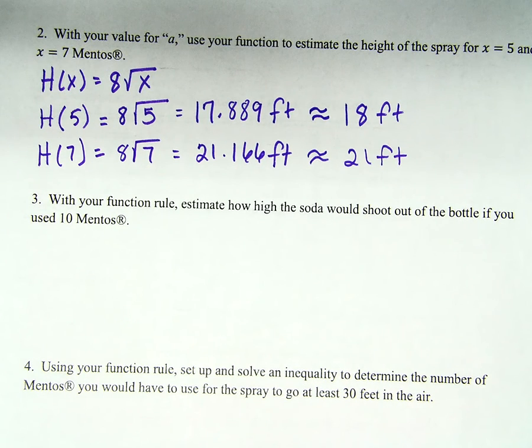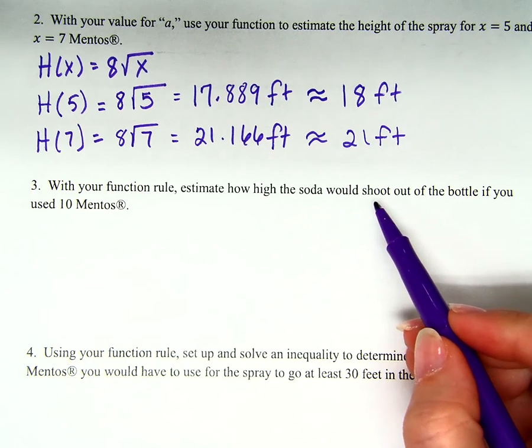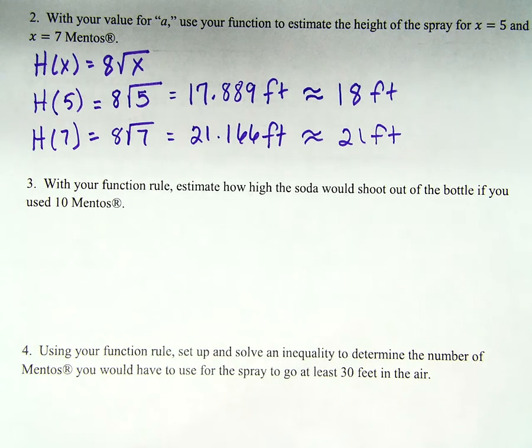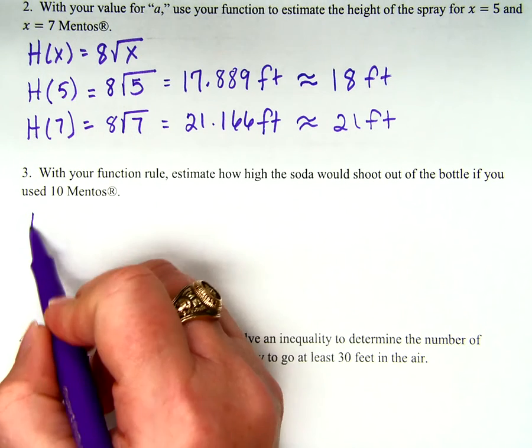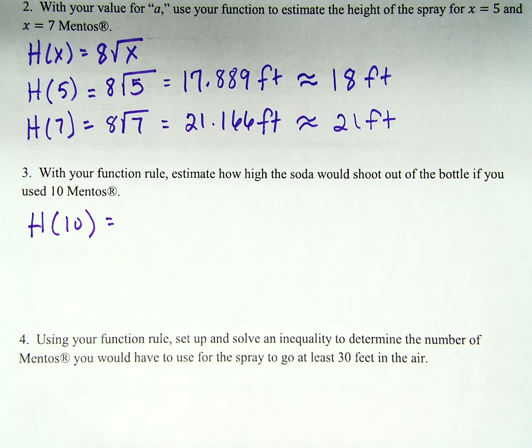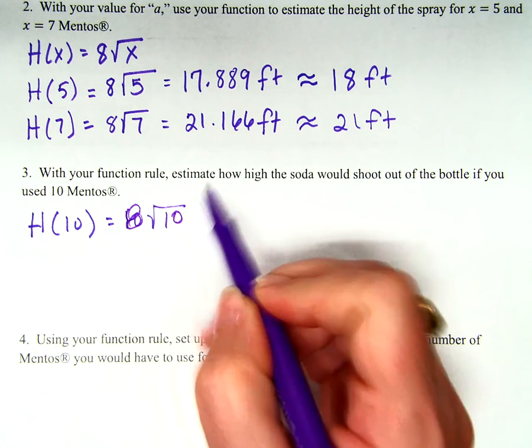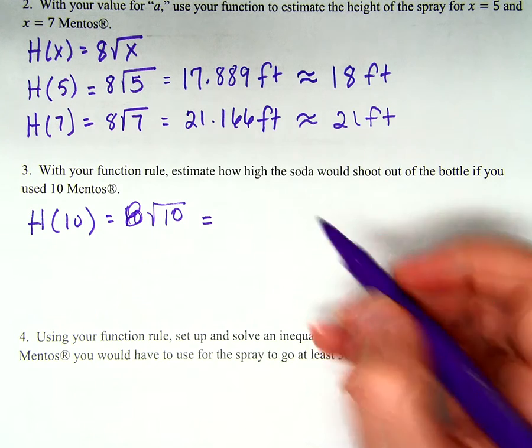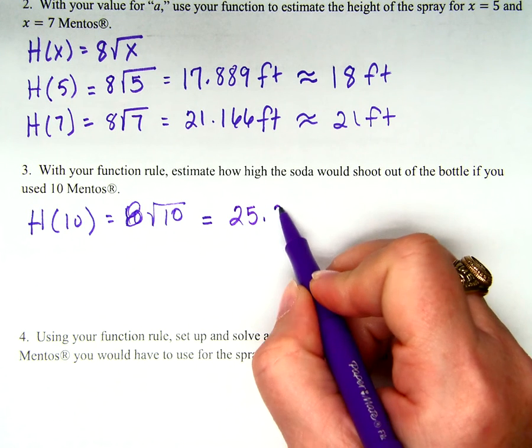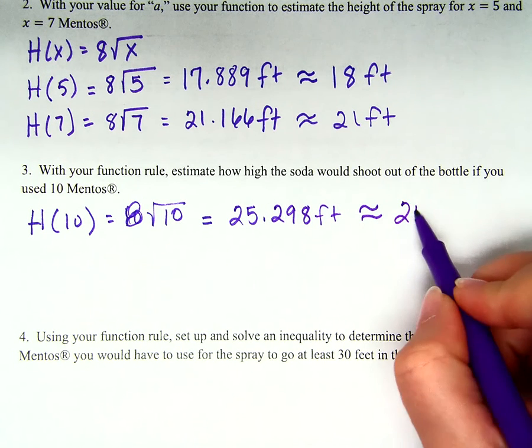Number three. With your function rule, estimate how high the soda would shoot out of the bottle if you used 10 Mentos. So first of all, I'm sorry we had to use this word in class today. Sorry about that. Okay? But you understand why? We don't say it again. No, we don't say it again. Okay, so what are we trying to find here? Wait, the same thing? Why are they asking it again? They asked it in a different way, didn't they? They wanted to make sure you understood the academic language. So what are we writing as our work? No, 25 point what? 2, 9, 8. And then what are we writing as our answer? 25 feet.